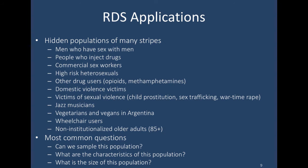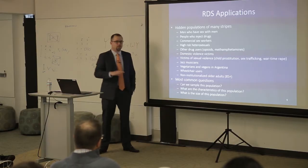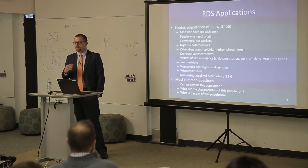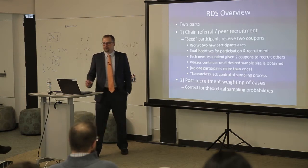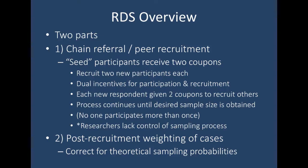There's a whole branch of literature being developed to estimate population size from RDS samples that is worth being aware of. Respondent-driven sampling is typically described as having two components: the peer referral component, and the statistical estimation or weighting of cases component. In the peer referral component, you start with a group of seed respondents and give them coupons, instructing them to go into the population and recruit other people. You incentivize people both for recruiting new participants and for their own participation. You go until the sample size is attained.